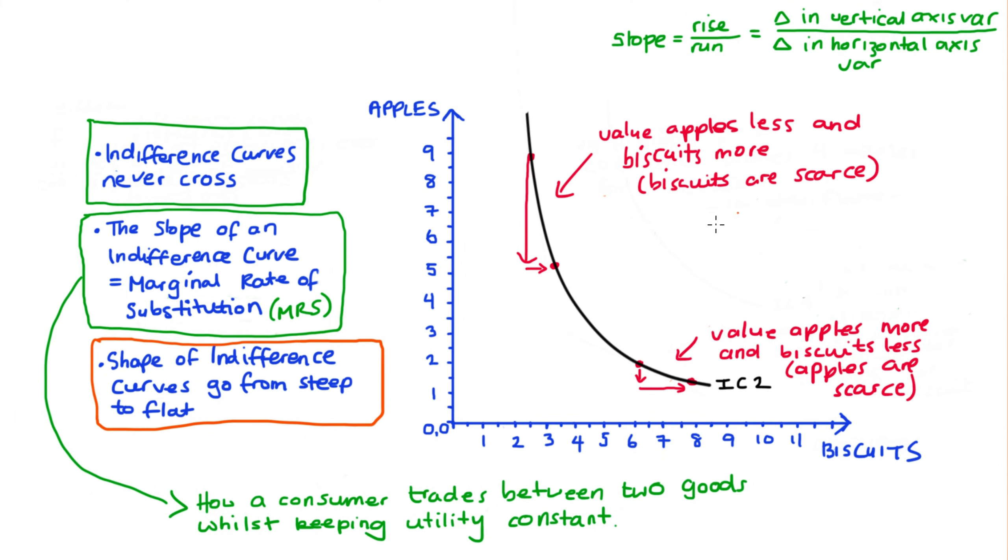Now, this feature is actually what we call diminishing marginal rate of substitution. And that's characterized by the absolute value of the slope of the indifference curve getting smaller or diminishing. And you can see this, we go steep to flat.